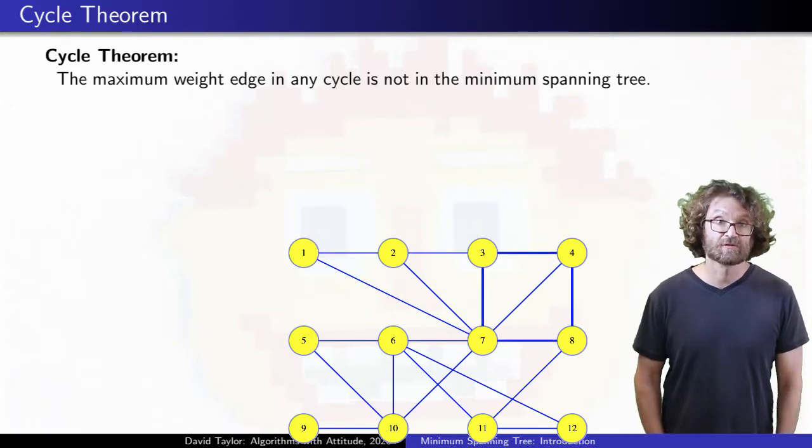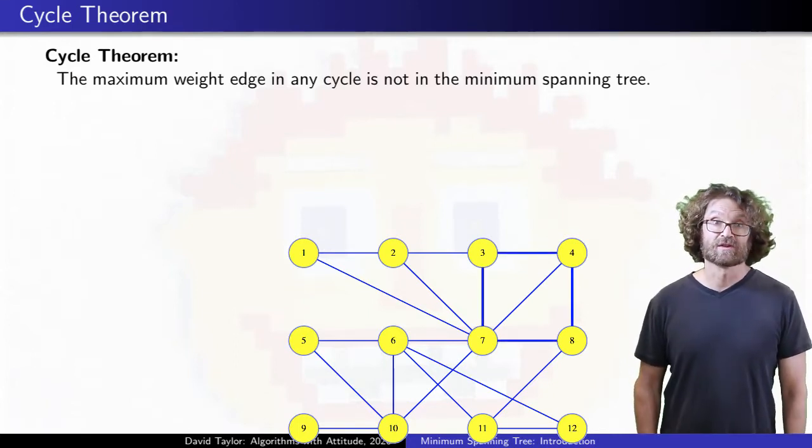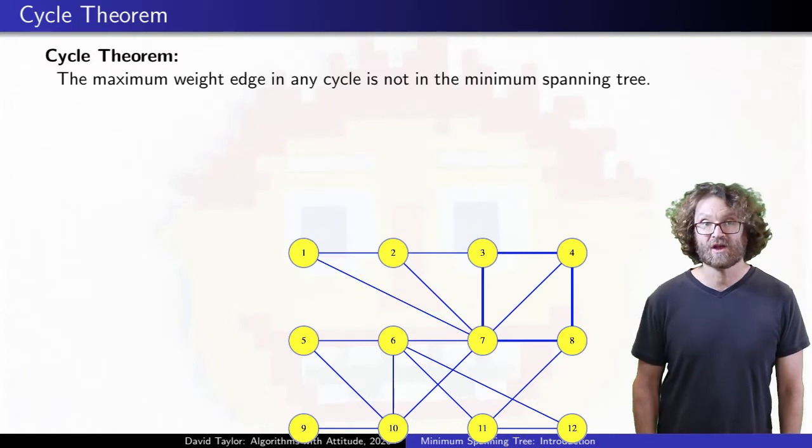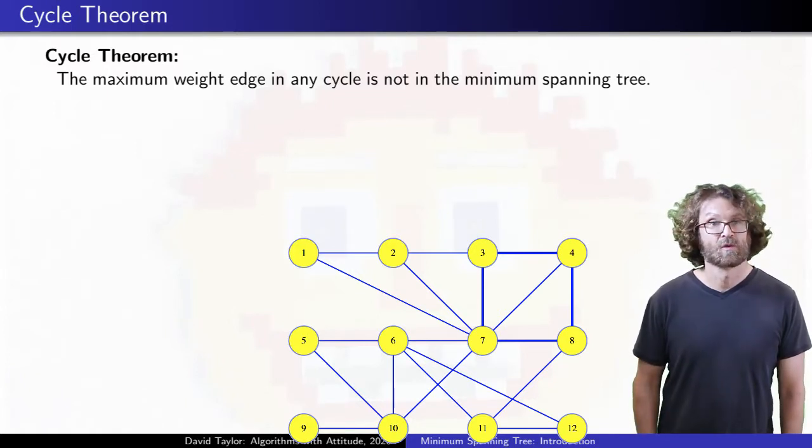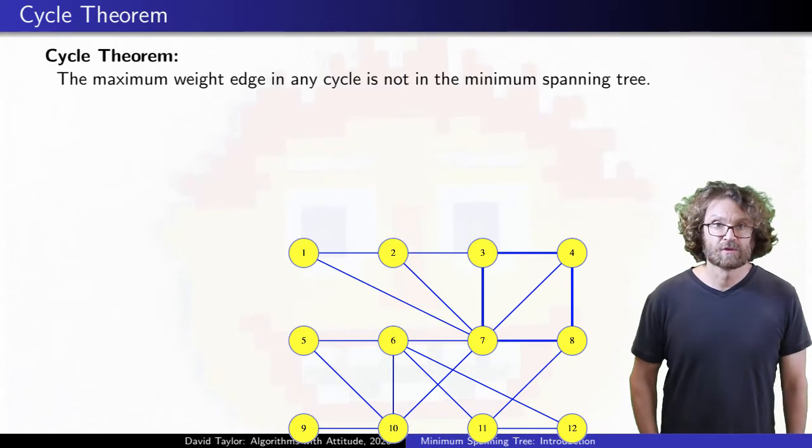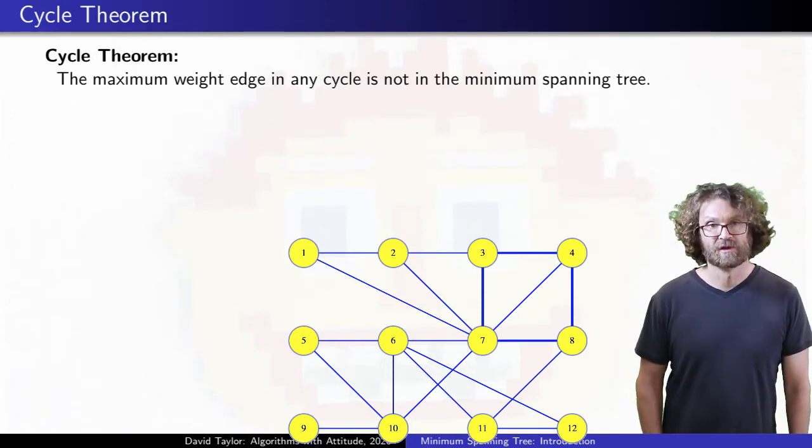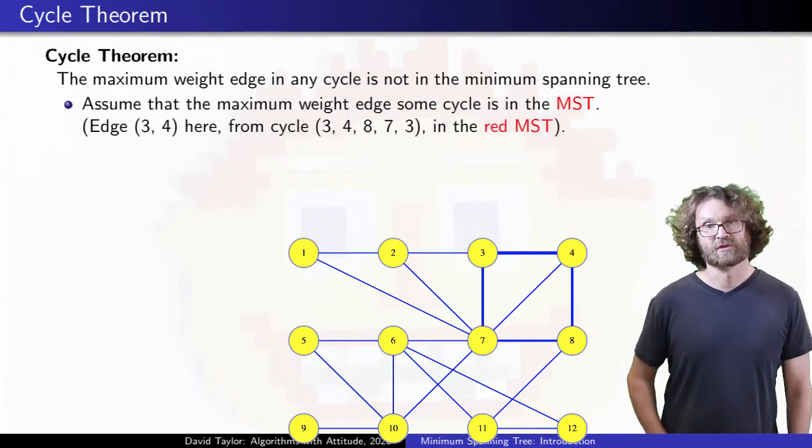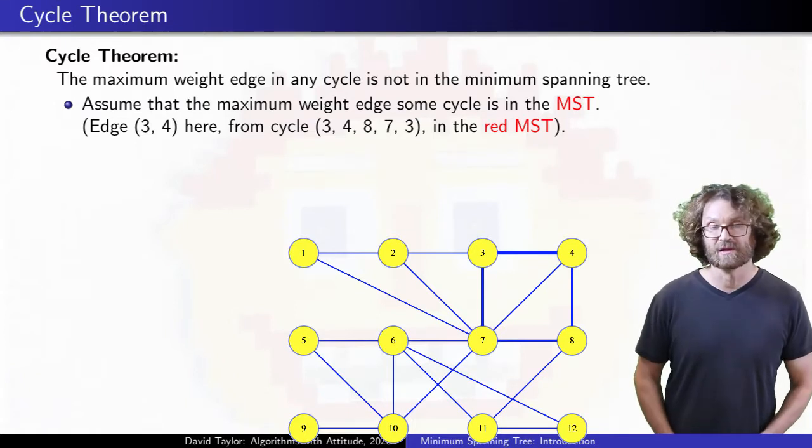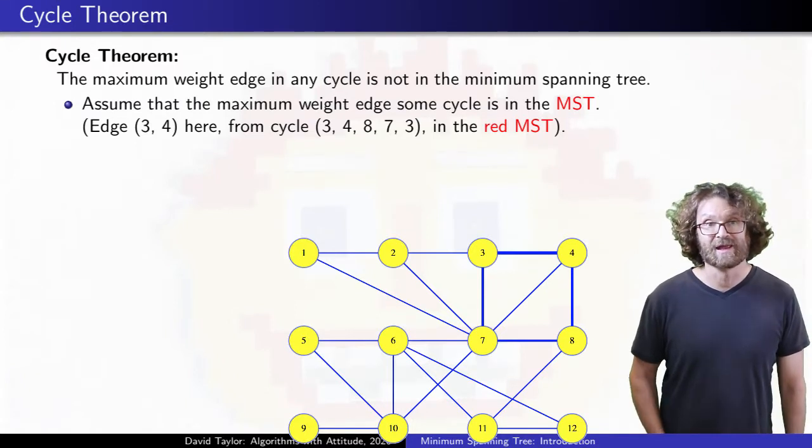If you have a cycle from the graph, the edge with maximum weight in the cycle is not in the minimum spanning tree. Why? The proof will look a lot like the previous ones. Imagine that the edge between 3 and 4 has the maximum weight in some cycle, and that that edge is also in the minimum spanning tree.